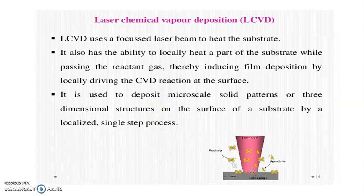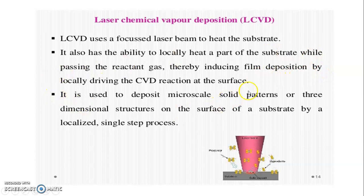In laser chemical vapor deposition (LCVD), a focused laser beam is used to heat the substrate. It has the ability to locally heat a part of the substrate while passing the reactant gas, thereby inducing film deposition by locally driving the CVD reaction at the surface. It is used to deposit micro-scale solid patterns on three-dimensional structures on the surface of the substrate by a localized single-step process.